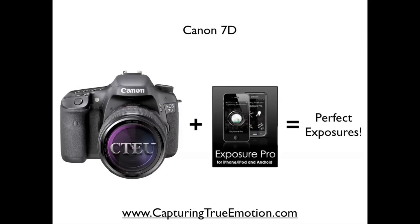Thank you for watching this video on how to find the settings on your camera. If you want to know more about how to shoot like a pro in any mode, check out our photography courses at www.capturingtrueemotion.com. Remember, your beautiful Canon 7D plus the Exposure Pro app equals perfect exposures. Thank you.